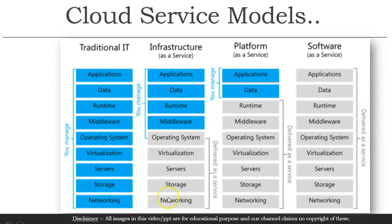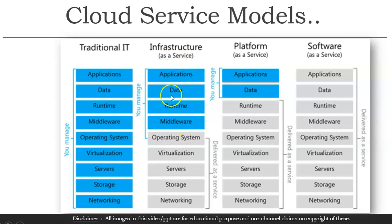In infrastructure as a service, you don't need to worry about networking, storage, server, virtualization, and the host operating system. But you do worry about the operating system on the virtual machine, middleware, runtime, Java and other libraries, data, and applications. Data is always part of the shared responsibility model — shared between the CSP and the customer. All the other lower layers are the responsibility of IaaS.